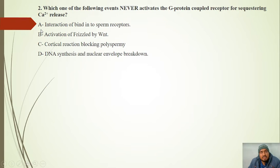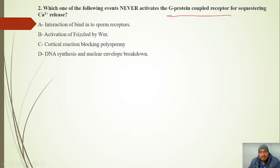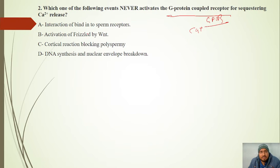The second question: Which of the following events never involves activation of a G-protein coupled receptor? The non-canonical WNT calcium pathway involves GPCR and calcium release. However, activation of the Frizzled receptor by WNT does not involve GPCR; Frizzled is not a G-protein coupled receptor.